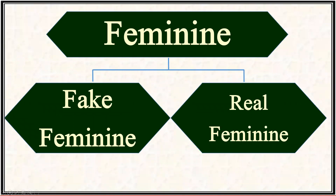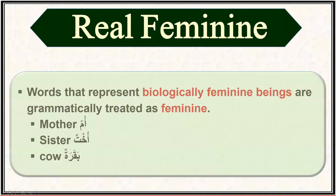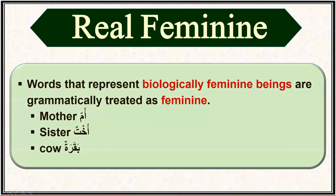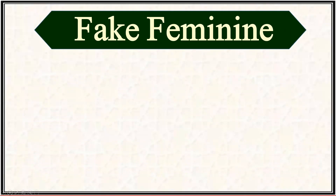The feminine words can be categorized into two further categories: one is called real feminine words and the other is called fake feminine words. Real feminine words are those which represent biologically feminine beings, like mother, sister, and cow. In all languages of the world, biological feminine beings are always treated as feminine — these are called real feminine.